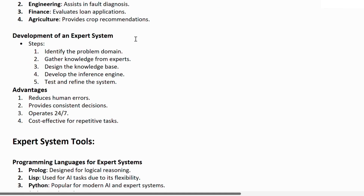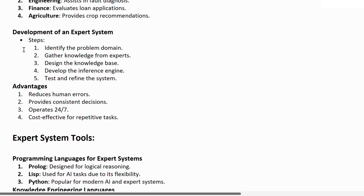Development of an expert system — these are the five steps to develop one. First step: identify the problem domain. Second: gather knowledge from experts. Third: design the knowledge base. Fourth: develop the inference engine. And the last one: test and refine the system.